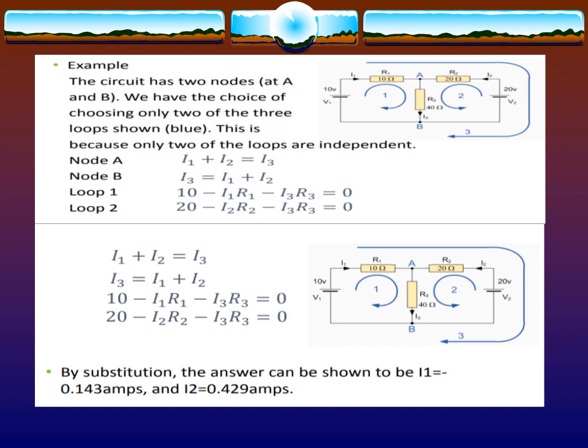You can get I3 equals I1 plus I2. For the second loop, 10 equals I1 times R1 minus I3 times R3 equals zero. 20 minus I2 times R2 minus I3 times R3 equals zero.